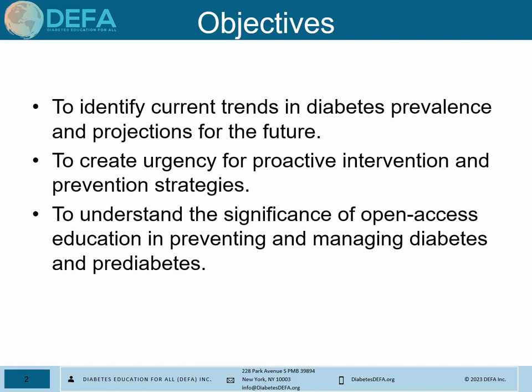Some of the basic objectives for today: our first objective is to delve into the current trends in diabetes prevalence by examining the present landscape, highlighting the urgency for proactive intervention and prevention strategies, and looking at statistics that emphasize the pressing need for action. We'll also discuss the role of open access education — the common theme for this conference — as a proven instrument not only in preventing diabetes, but also effectively managing it, and why this approach is so impactful in empowering individuals and communities.